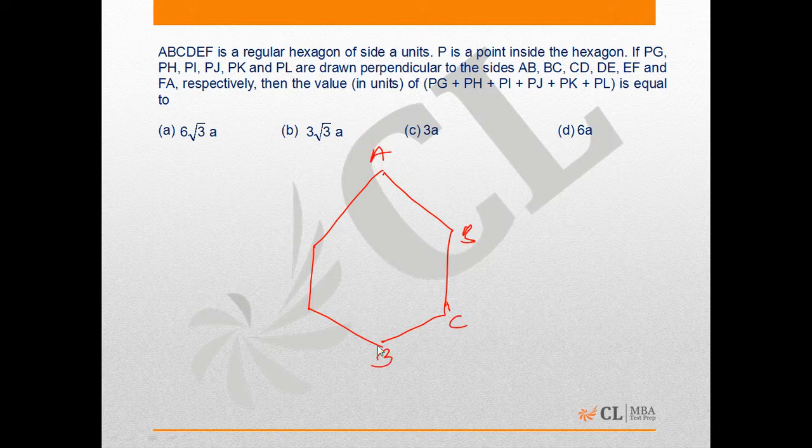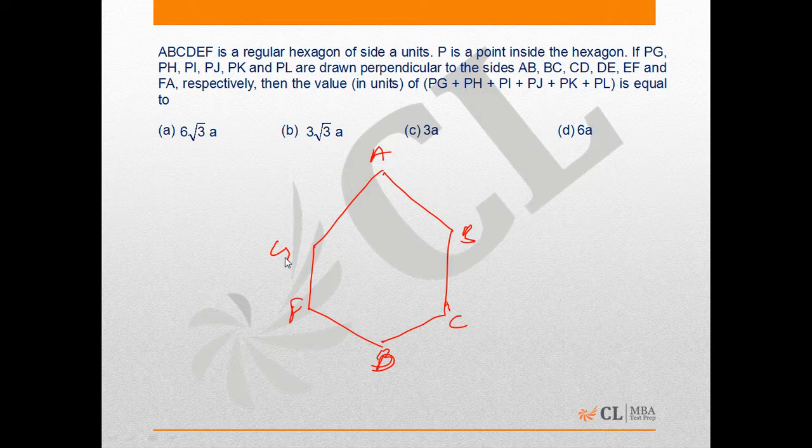The side of this hexagon is a. P is a point inside the hexagon. If PG, PH, PI, PJ, PK, and PL are drawn perpendicular to sides AB, BC, CD, DE, EF, and FA respectively,